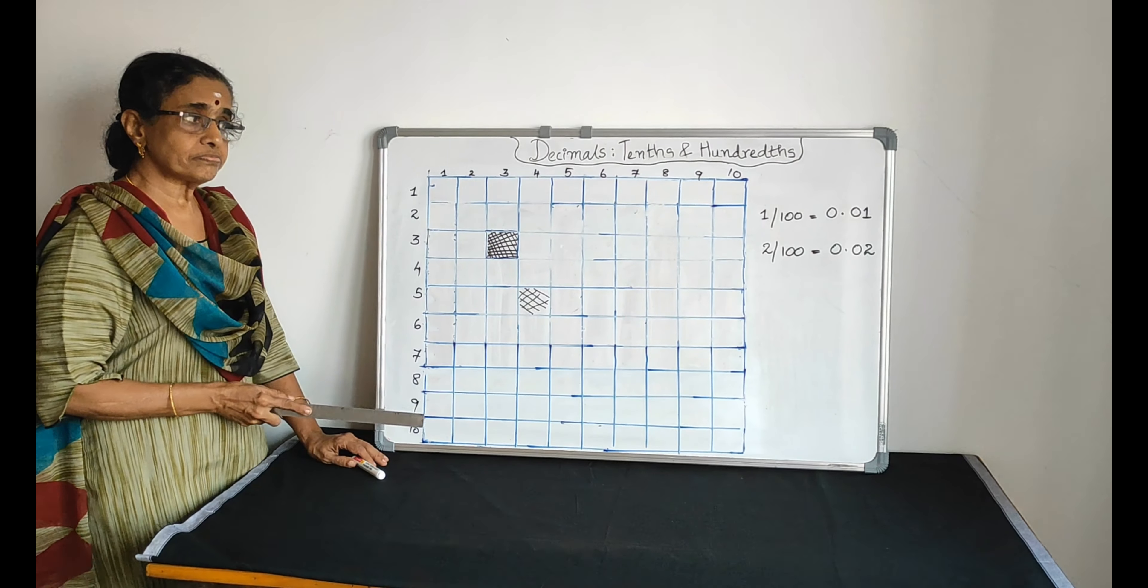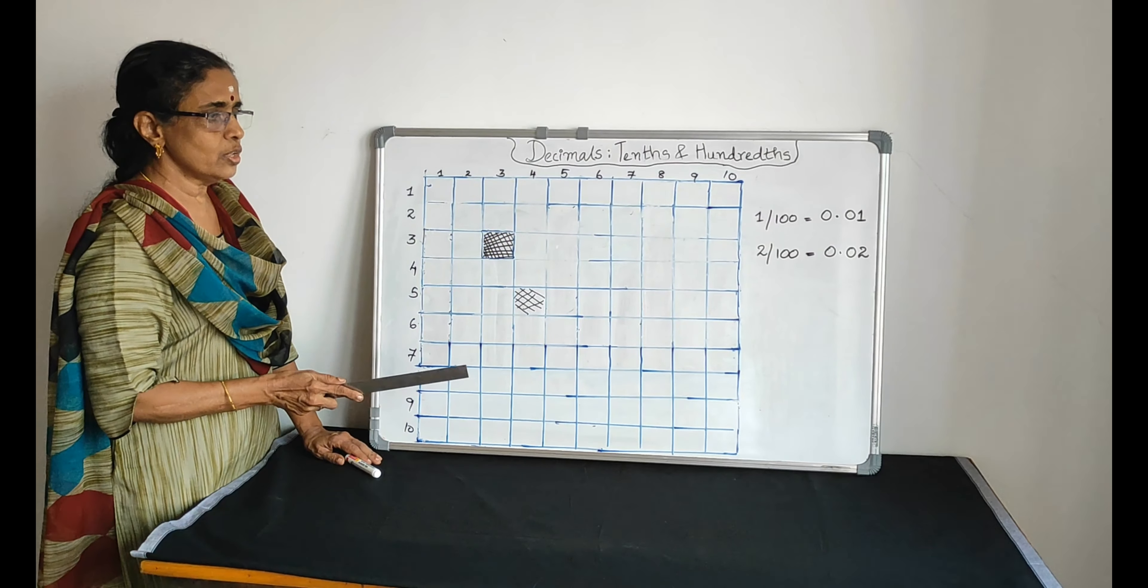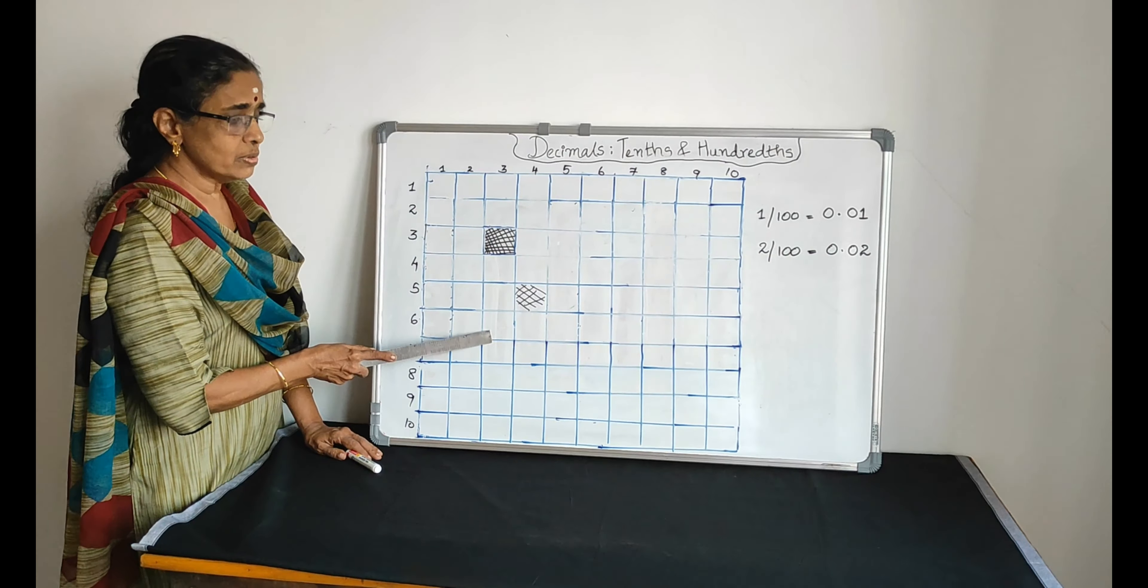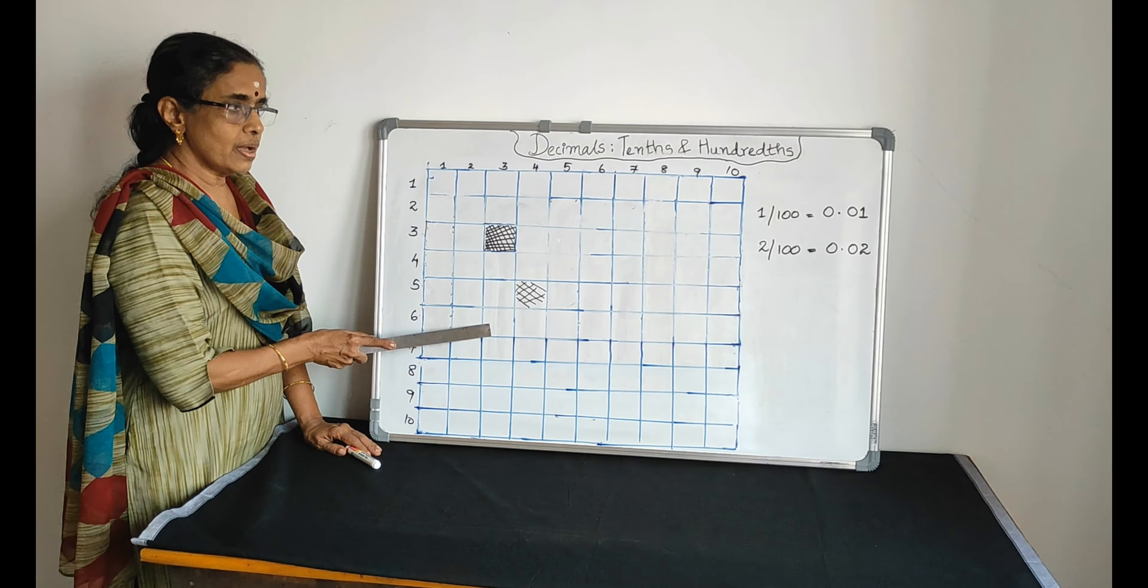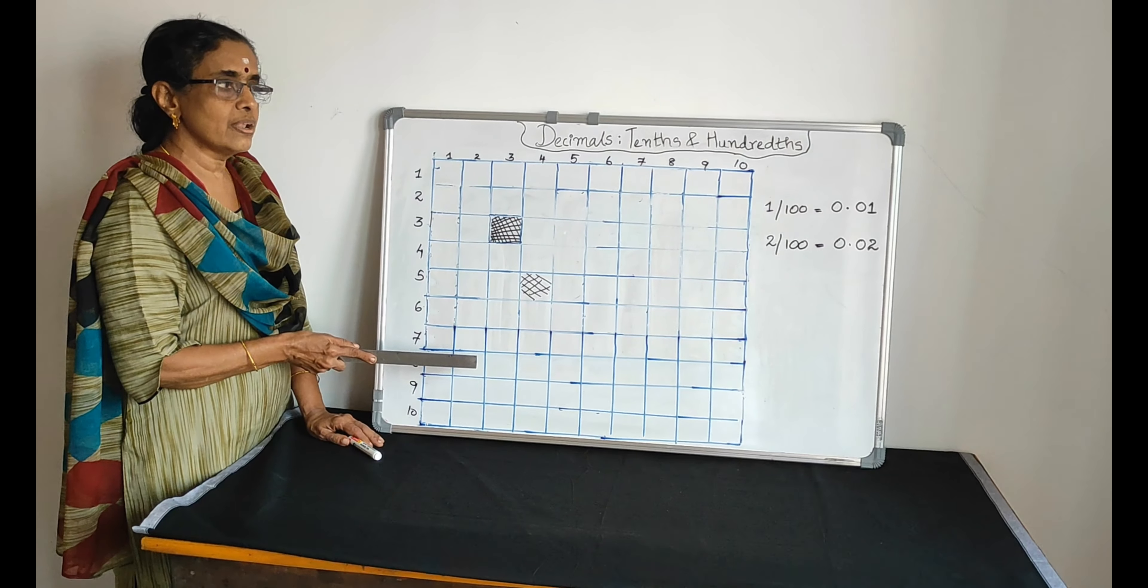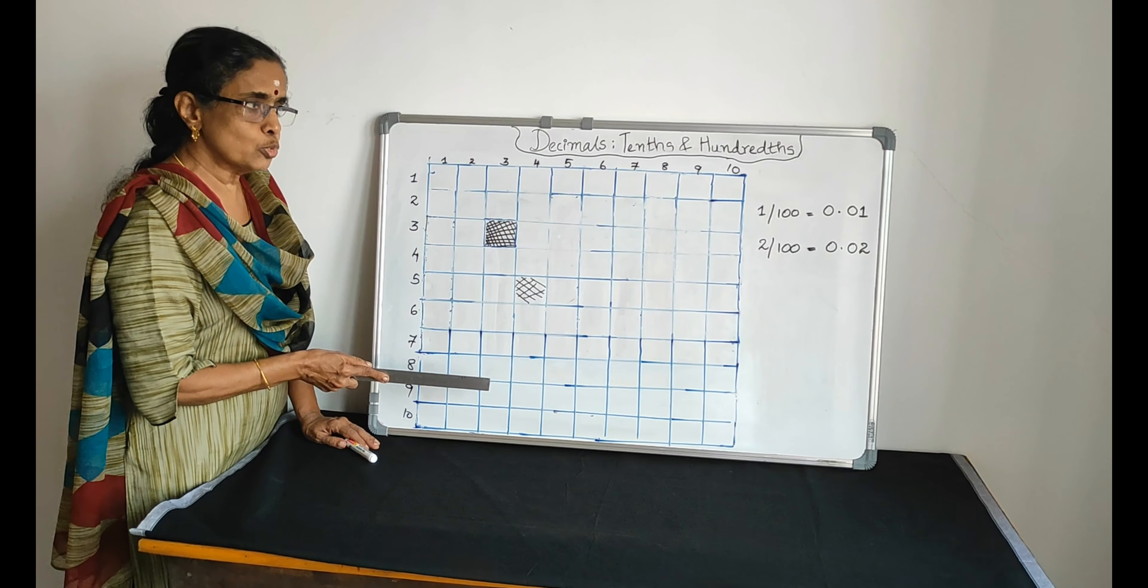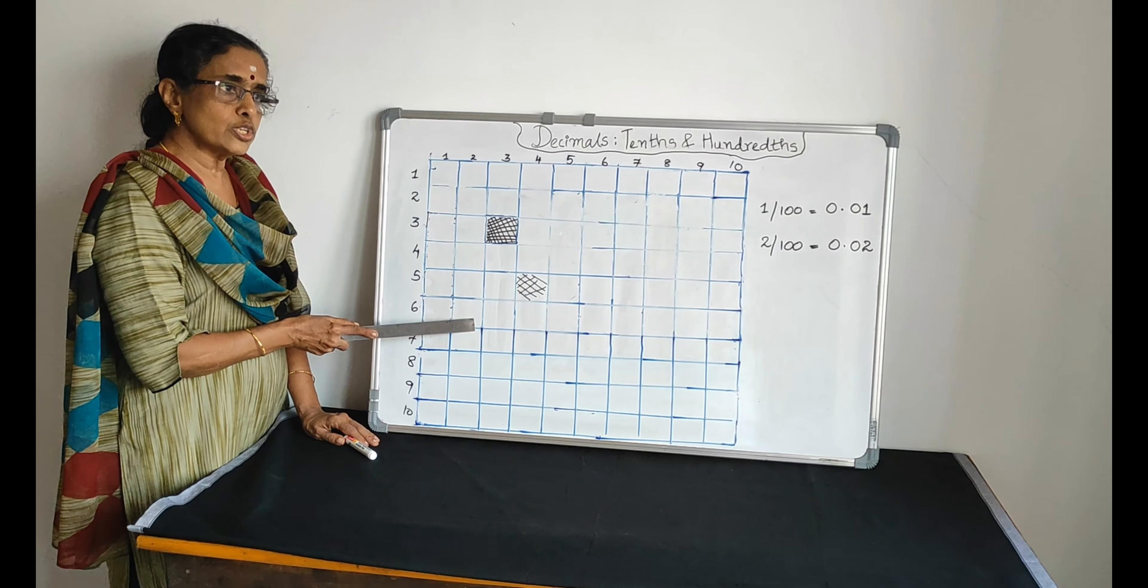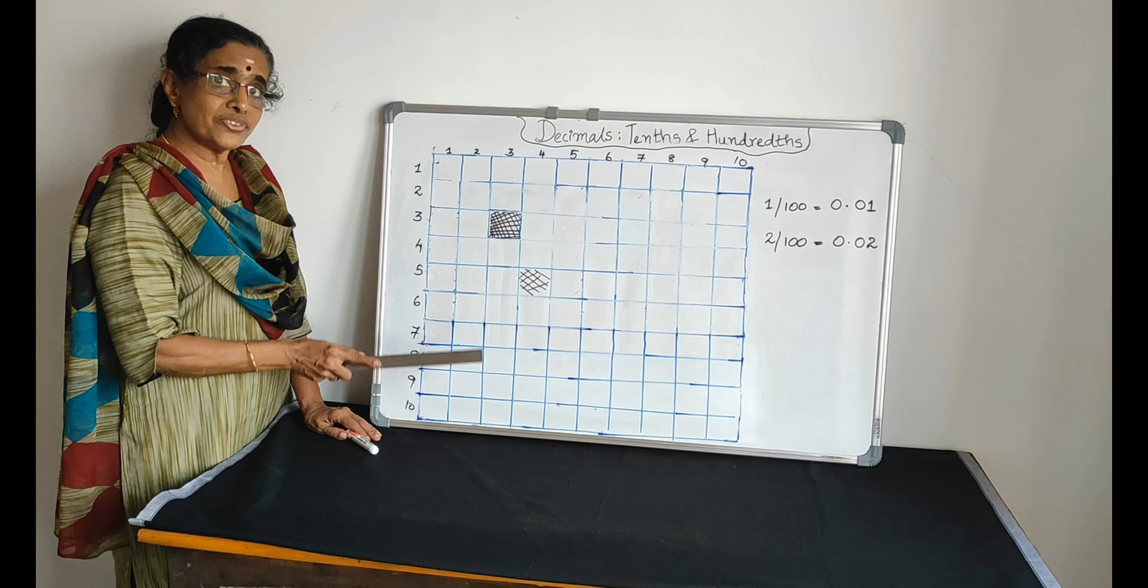Now I am giving a question. You have to take color and you have to draw the boxes and represent the decimal 0.25. Pause and try.